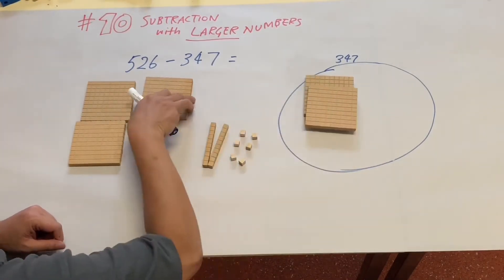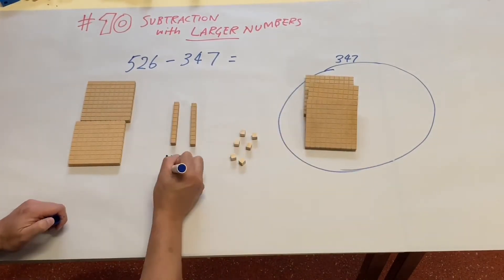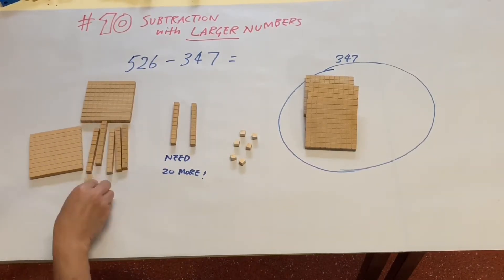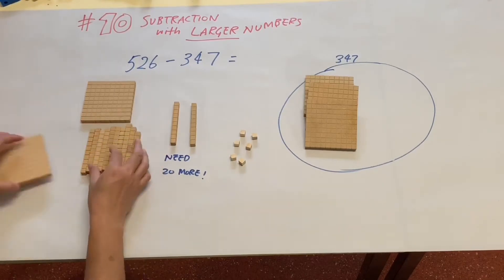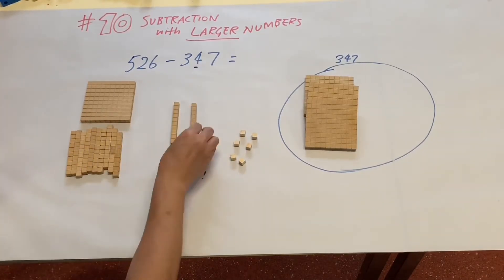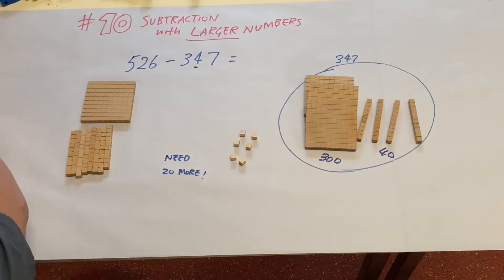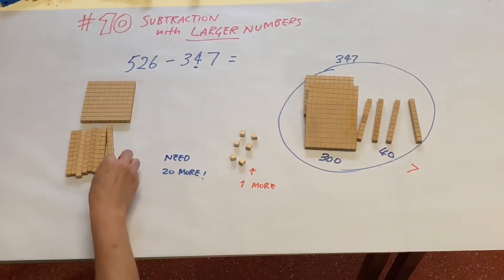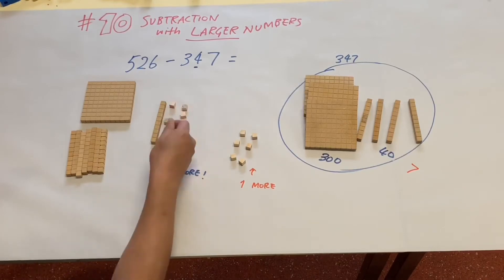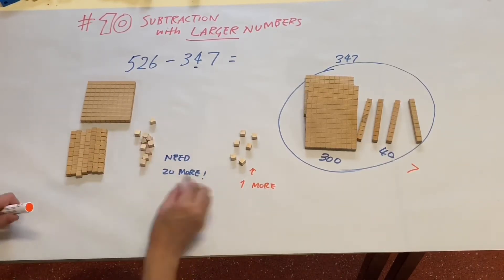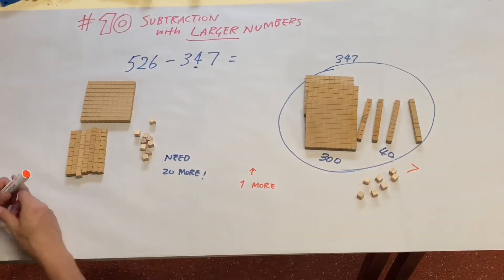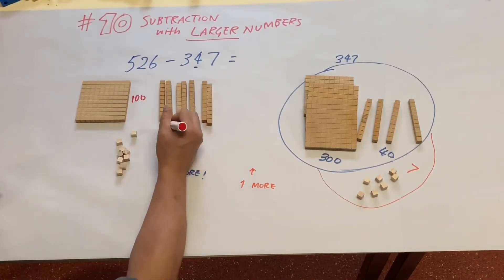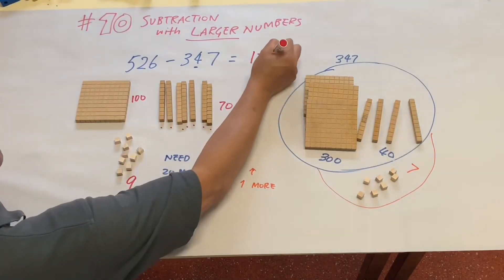Take away 300. Take away 40, we need 20 more, so we have a fair trade of 10 tens and 100. 40 is taken away. Now 7, we need one more, so the 10 is going to be broken into 10 ones. The answer is 100, we need one more, so let's do it. 179.